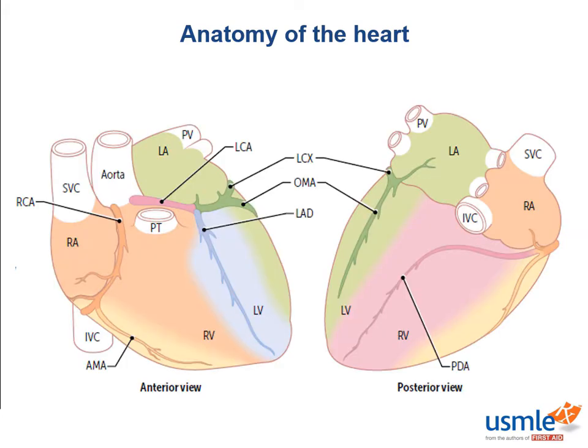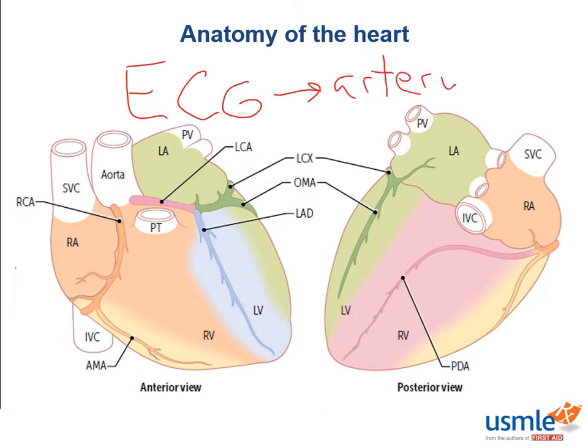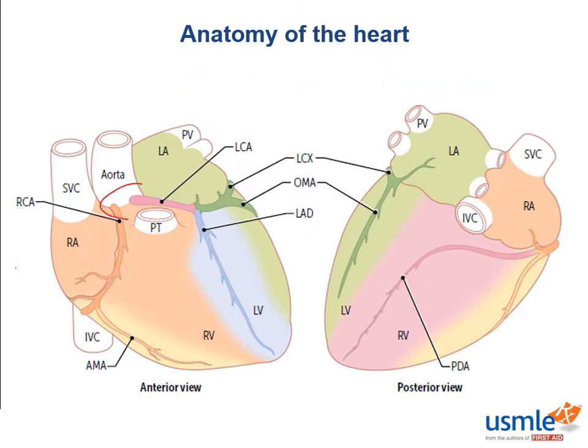Let's start with this high yield image because many patients suffer myocardial infarctions and test question writers can easily integrate findings on ECG to which artery is involved. Coronary arteries originate from the root of the aorta just above the aortic valve cusps. The aortic valve leaflets block the opening to the coronary arteries in systole, which is why most blood enters the coronary arteries in early diastole.